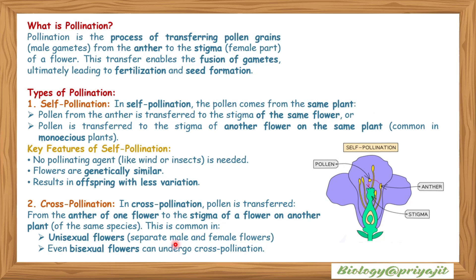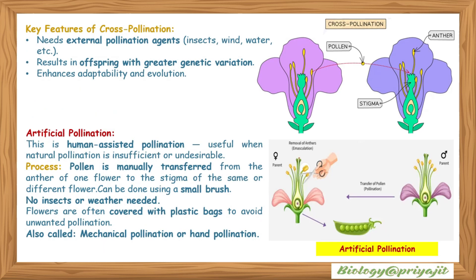In cross-pollination, pollen is transferred from the anther of one flower to the stigma of a flower on another plant of the same species. This is common in unisexual flowers and even in bisexual flowers. Key features: it needs external pollination agents like insects, wind, or water; results in offspring with greater genetic variation; and enhances adaptability and evolution.